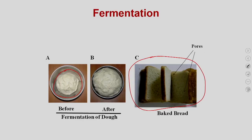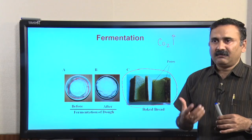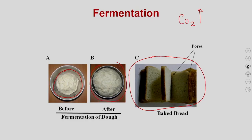When you add the yeast to the dough, the yeast utilizes the glucose present inside the dough, producing carbon dioxide gas. That carbon dioxide comes out of the dough, making bubbles inside it, causing the dough to swell up and become fluffy. This results in small holes inside the bread, making it spongy and good in taste.